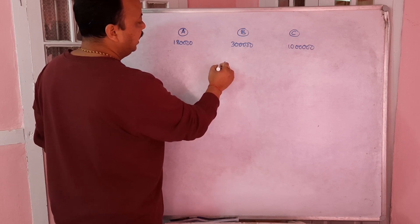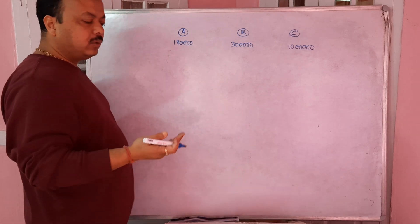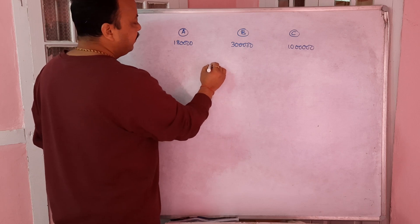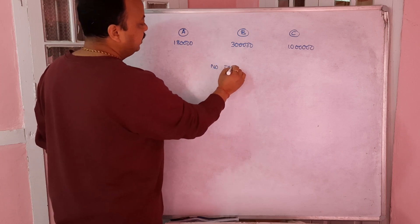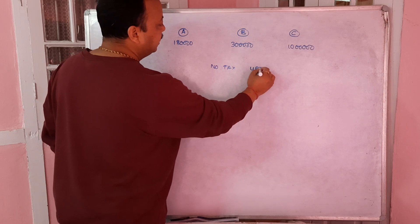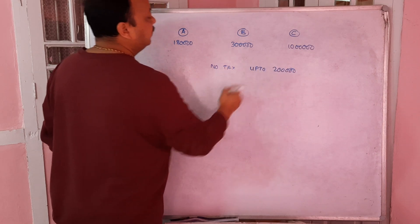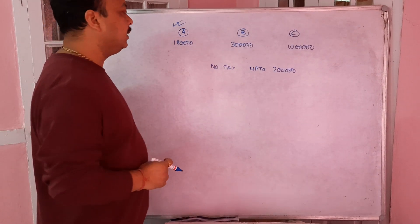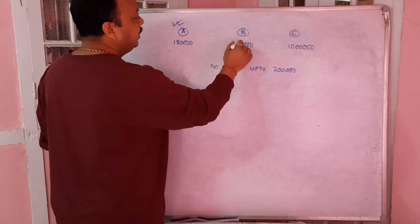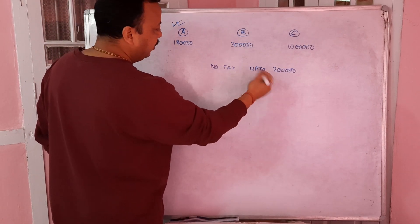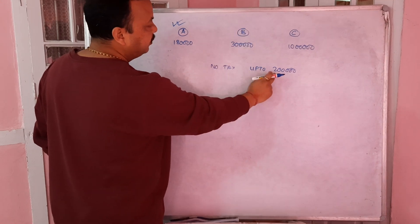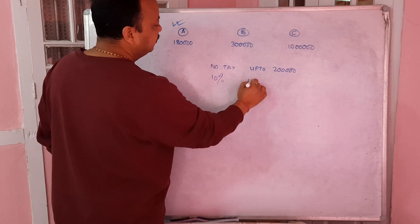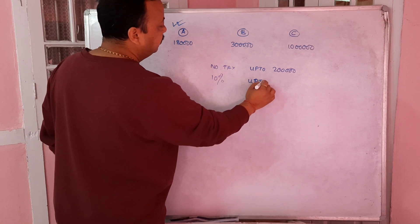The government's rule: if you have income up to two lakhs, you are not taxable - that means no tax for income up to two lakhs. So person A will satisfy that condition. Beyond two lakhs, ten percent tax must be paid if income is up to five lakhs.